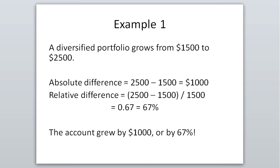Let's say you're investing money and your diversified portfolio grows from $1,500 to $2,500. The absolute difference is new minus old: $2,500 minus $1,500 equals $1,000 — your account went up by $1,000. The relative difference is new minus old over old: ($2,500 − $1,500) ÷ $1,500 = 0.67, or 67%. So your portfolio went up in value by 67%.